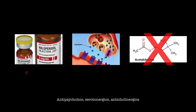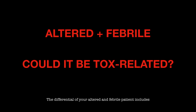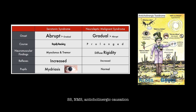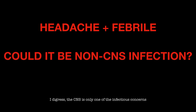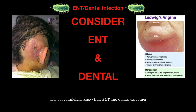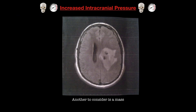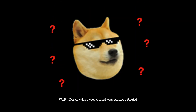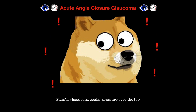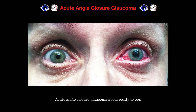With their own antipsychotics, serotonergics, anticholinergics — the differential of your altered and febrile patient includes serotonin syndrome, NMS, and anticholinergic causation. I digress. CNS infection is only one of the infectious concerns. The best clinicians know the ENT and dental can burn. Another to consider is a mass — morning, progressive, positional. And now another pass — wait, doge, what are you doing? You almost forgot painful visual loss!